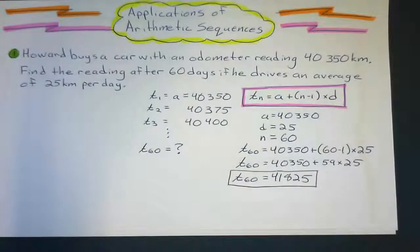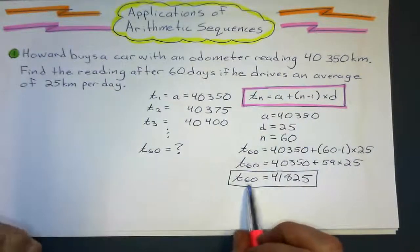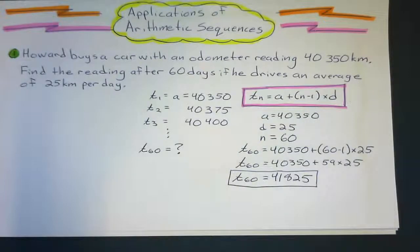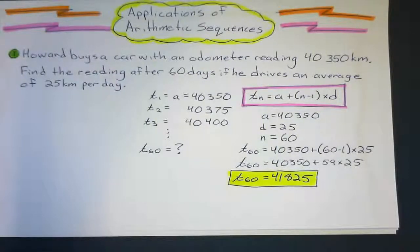Okay, so the 60th term of that sequence would be 41,825, which would be Howard's odometer reading on that day. Okay, let's look at another example here and see how we do with it.